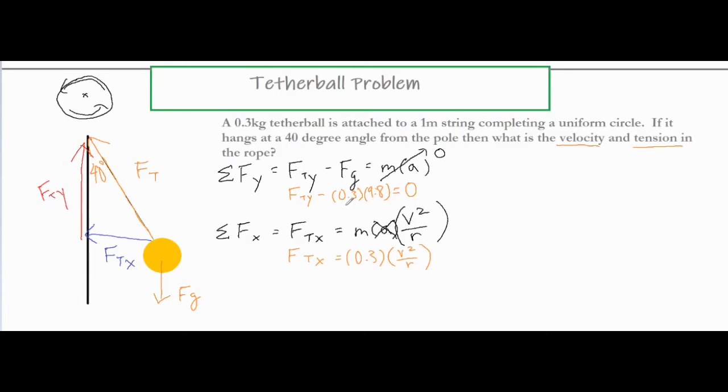If you take 0.3 times 9.8, that's 2.94 Newtons. If we just go ahead and add 2.94 to both sides, then our FTy equals 2.94 Newtons.